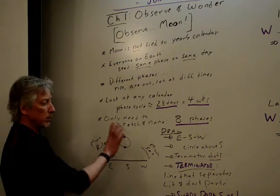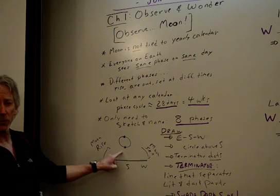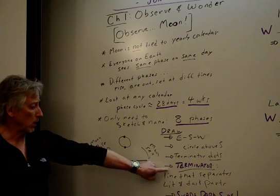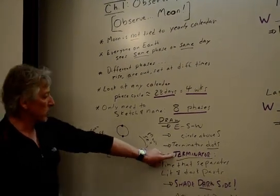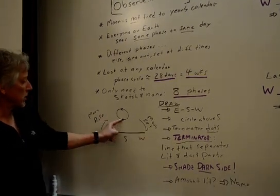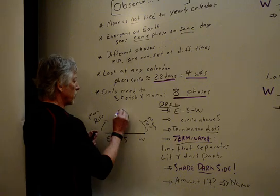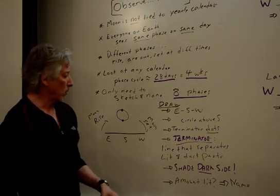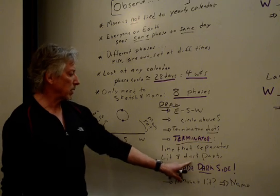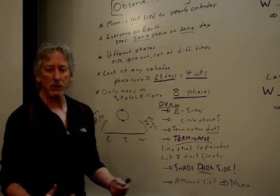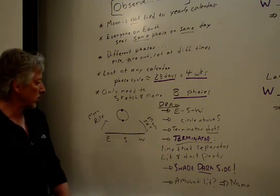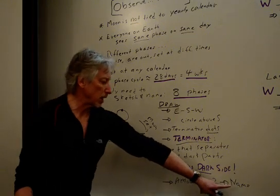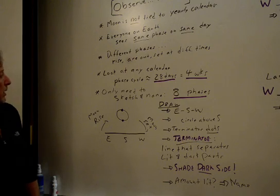For every one of these eight phases, we're going to draw one of these pictures — 'Eat Sandwich,' circle above south. We're going to put Terminator dots, which will really help you avoid mistakes. Then we're going to draw the Terminator and shade the dark side. The Terminator is the line on anything — moon, Earth, any planet — that separates the lit and dark parts. Then we shade the dark side, and we'll look at how much it's lit and name it.